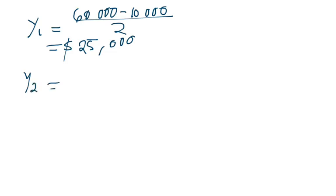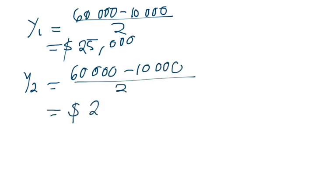The depreciation is spread out evenly, so it will be exactly the same. $60,000 minus $10,000 over 2 years gives you $25,000 for year 2 as well.